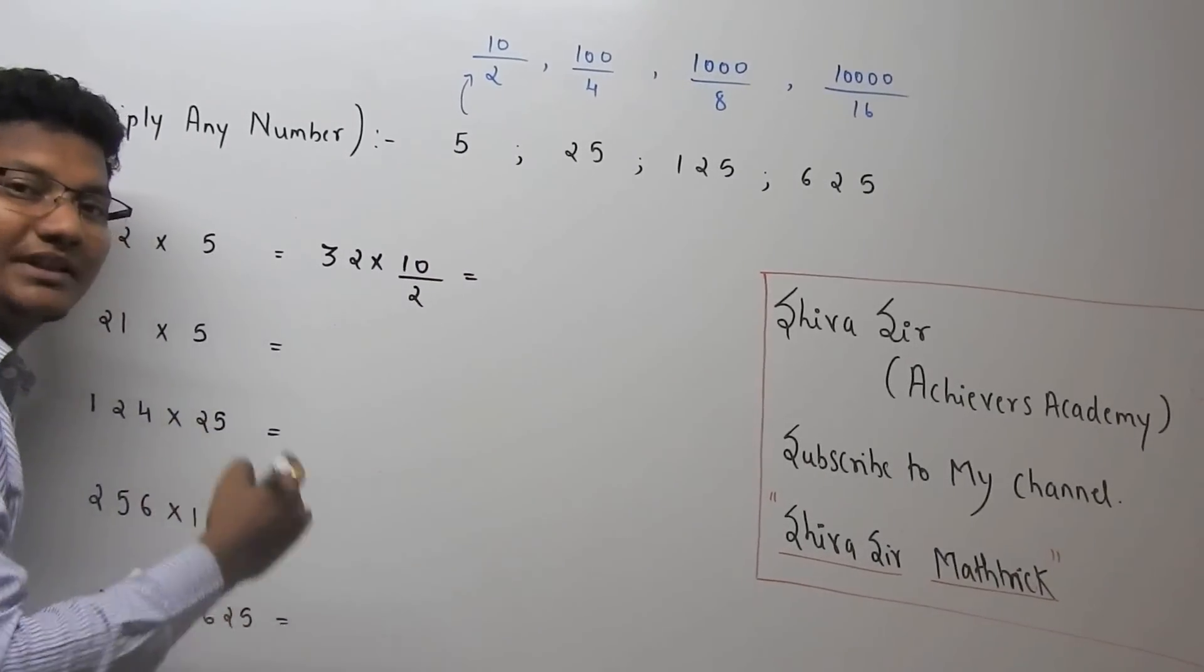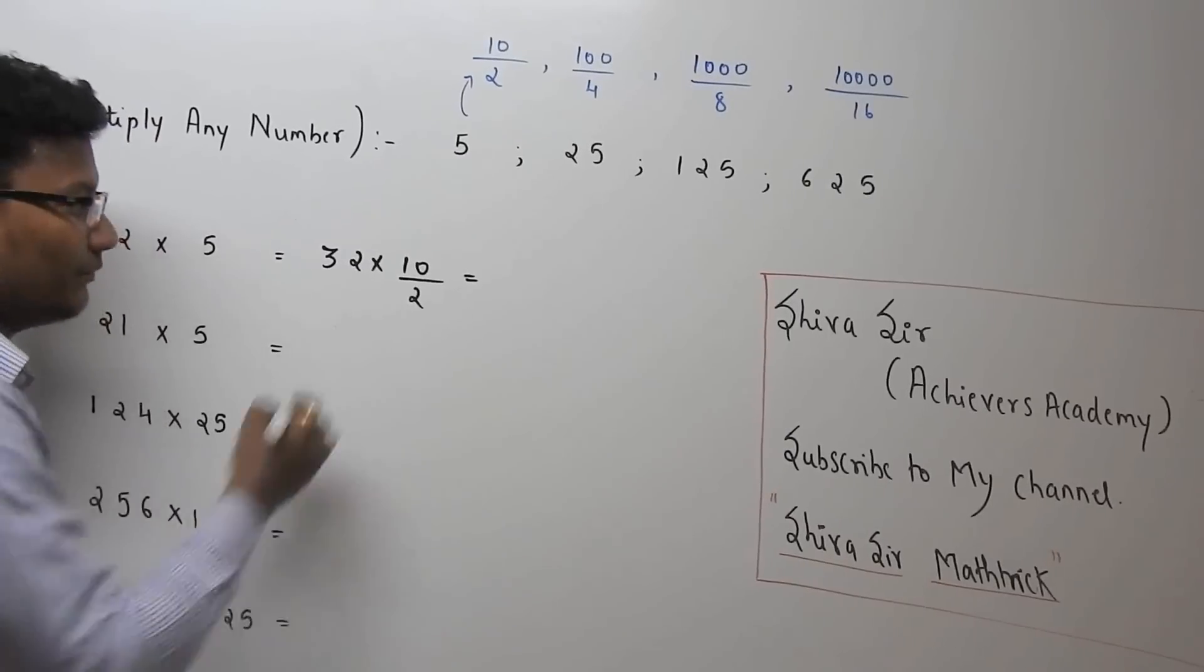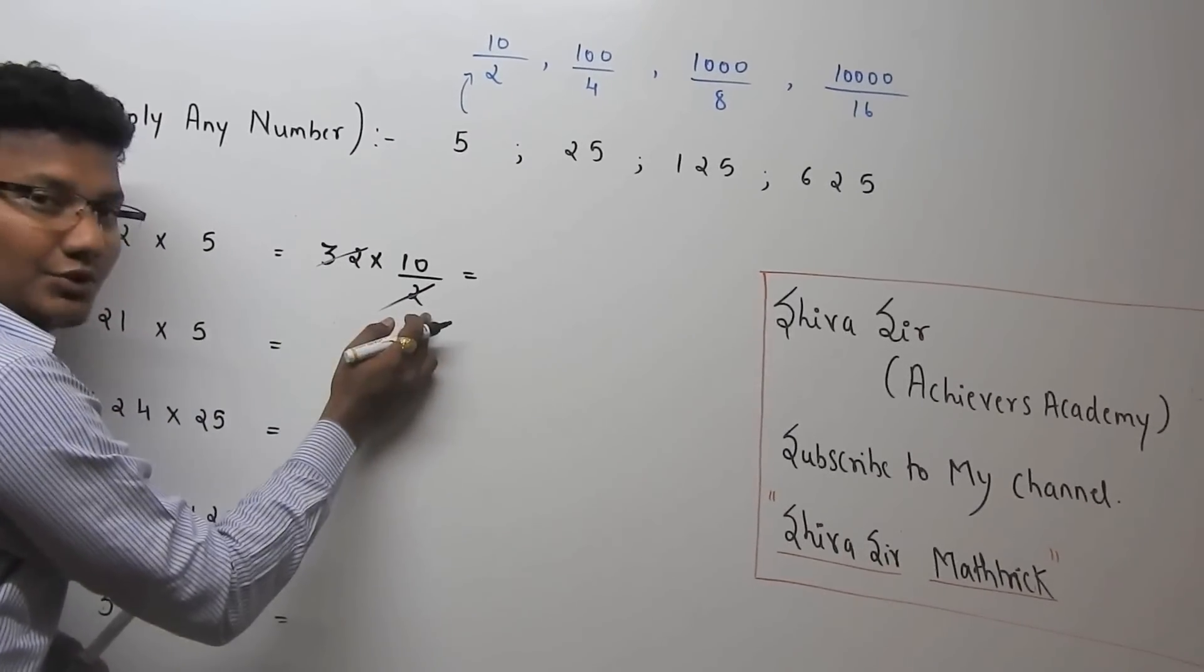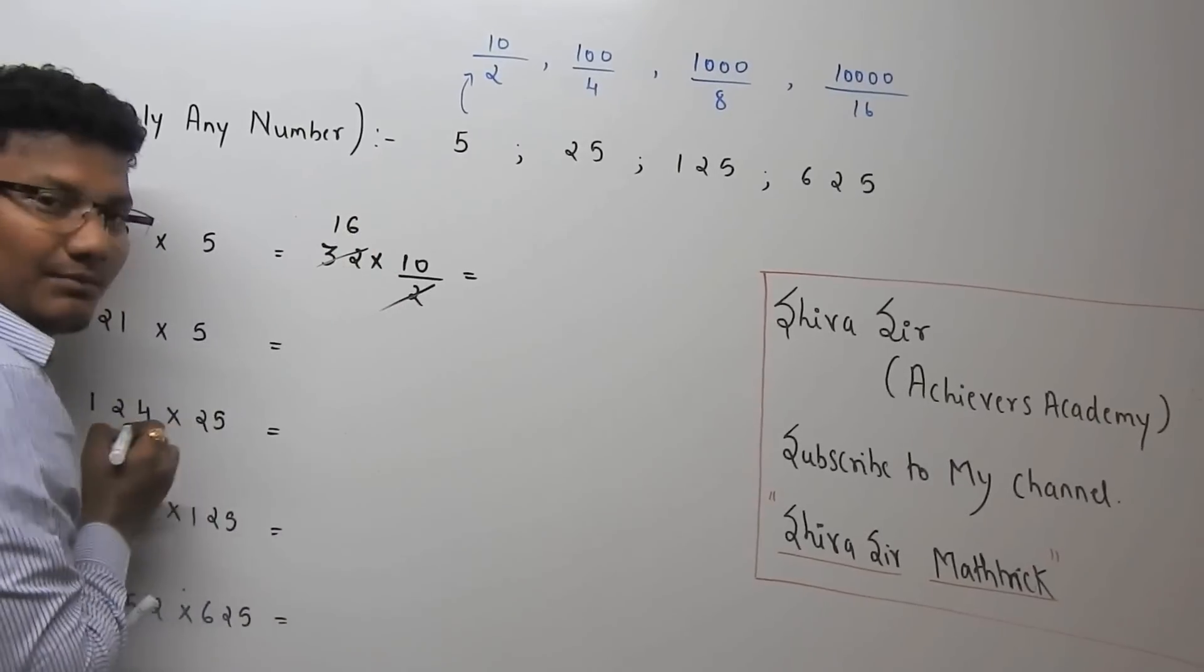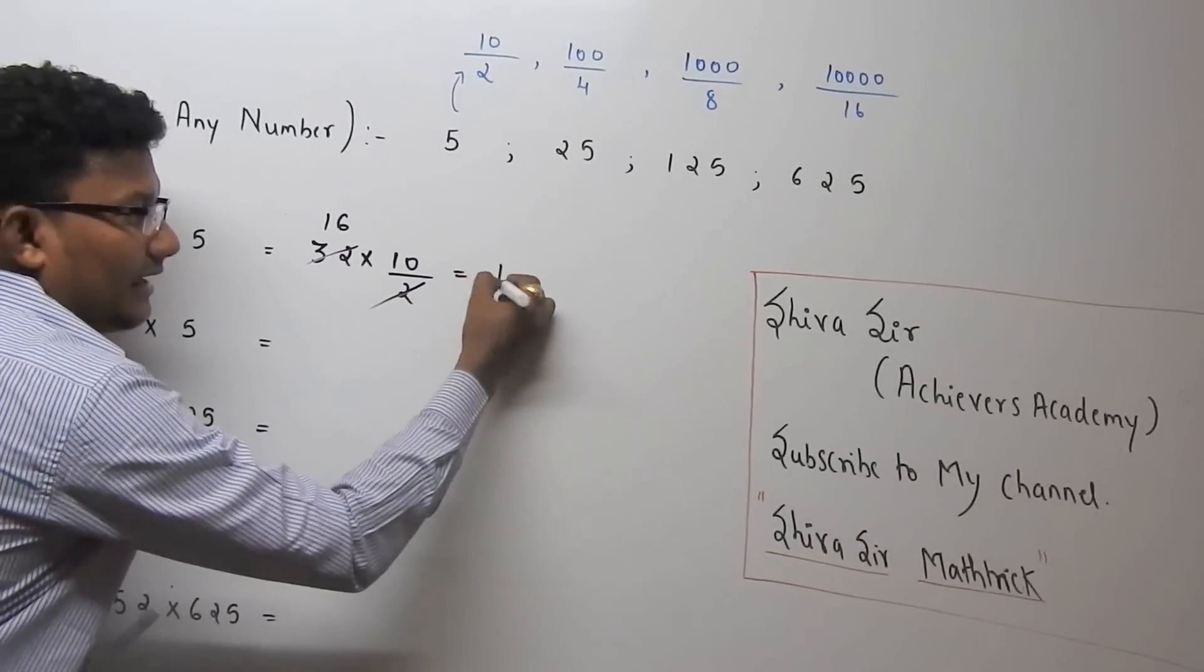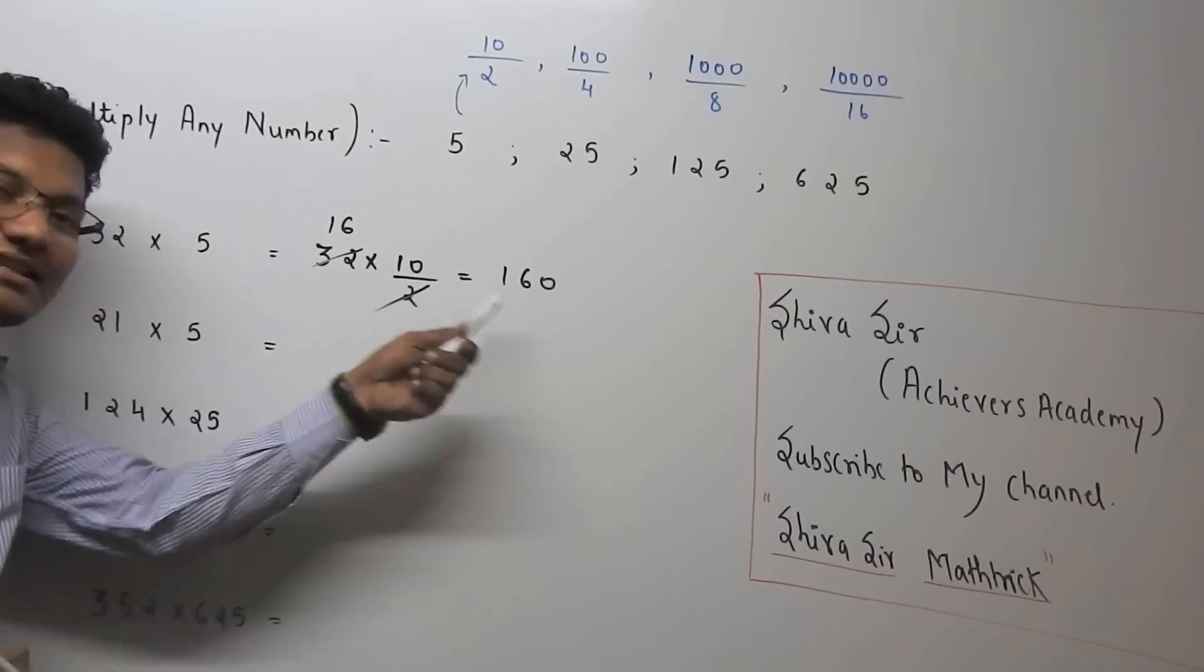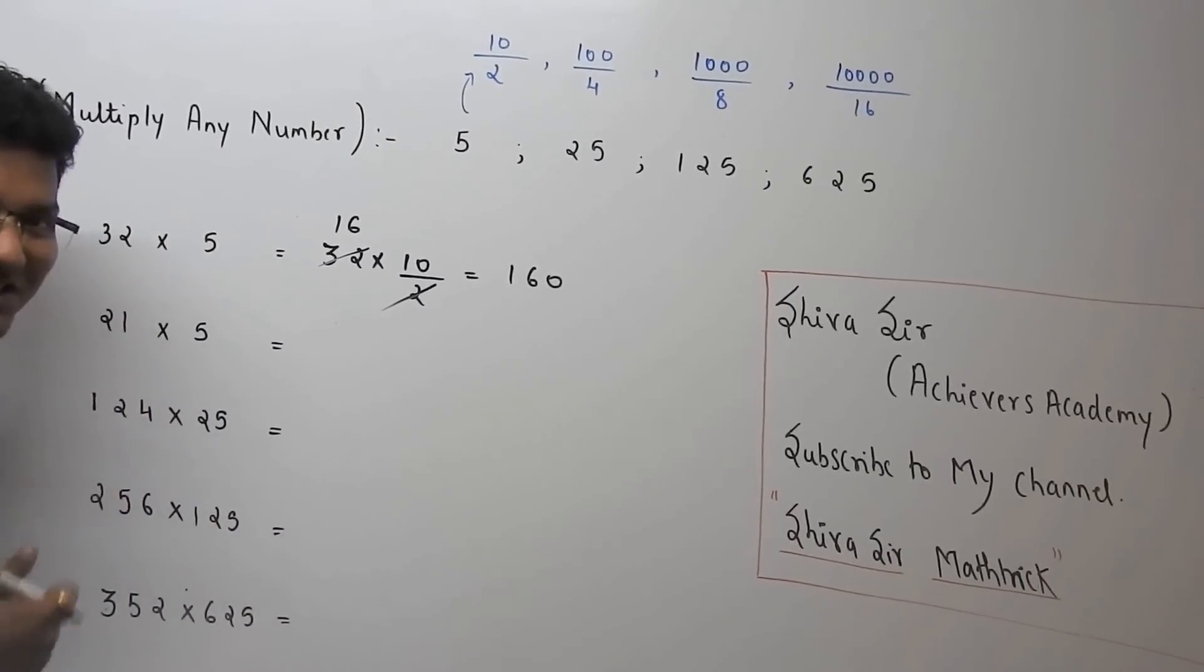See how to make the calculation faster and easy. This can be written as 32 by 2, which is 16. So what is 16 into 10? It is 160. So 32 into 5, you will get the answer 160. Move on to the next example.